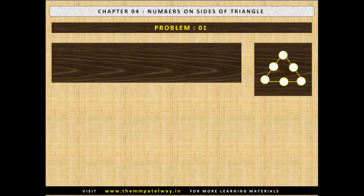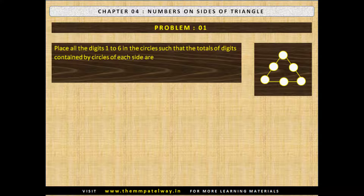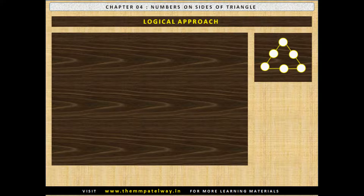Problem No. 1. Place all the digits 1 to 6 in the circles such that totals of digits contained by circles of each side are: A) 9 and B) 12. Now let us use the logical approach.